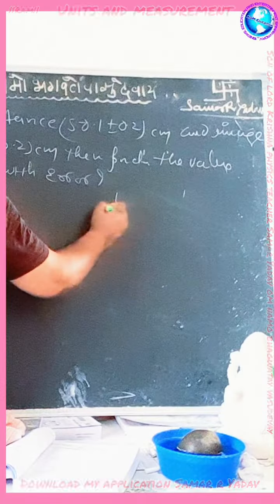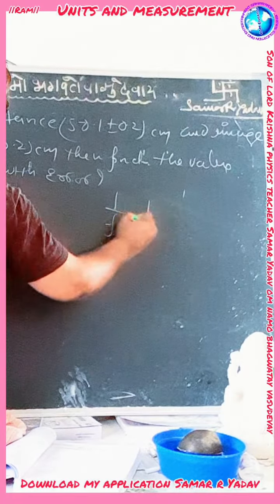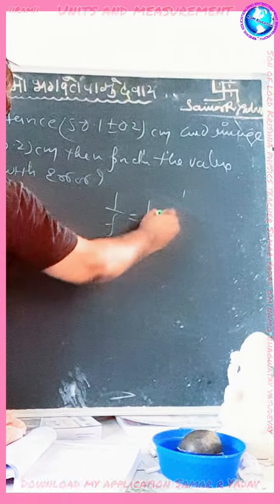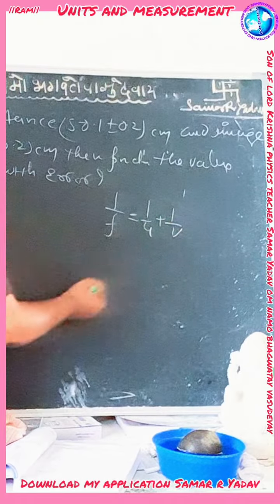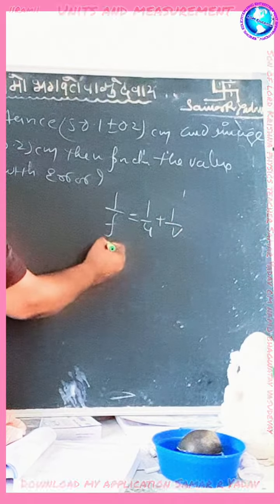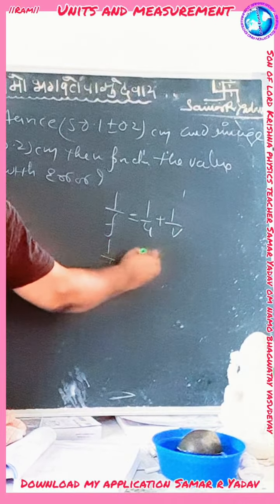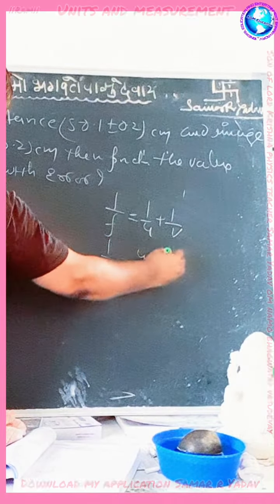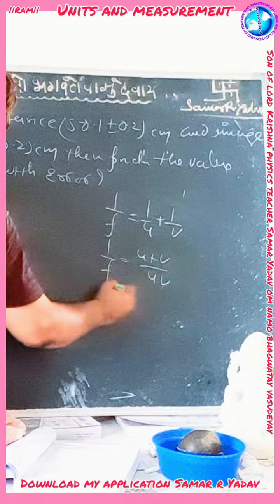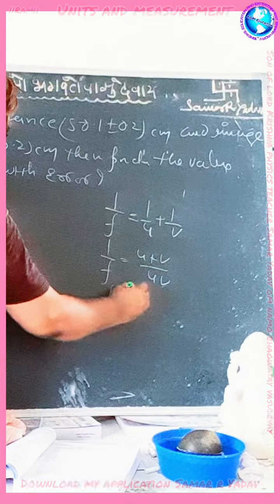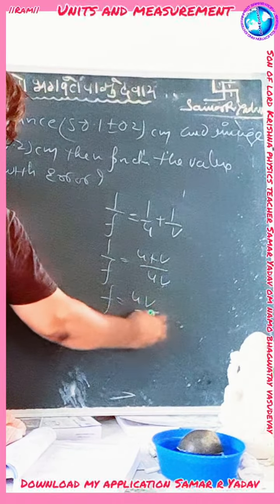We know the equation of focal length: 1/f = 1/u + 1/v. Therefore, 1/f = (u + v) / (u × v). Rearranging, f = (u × v) / (u + v).